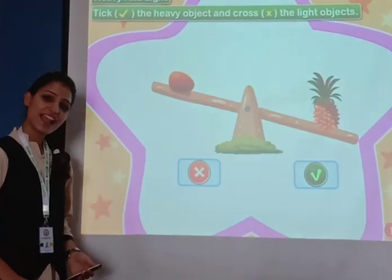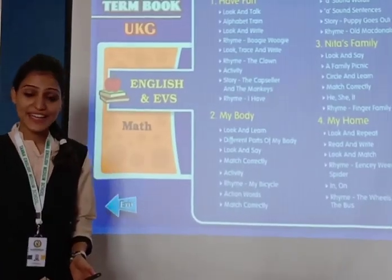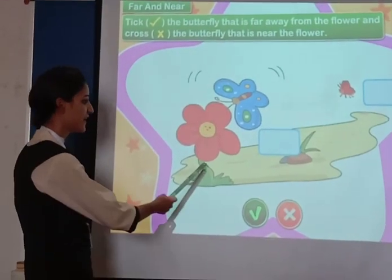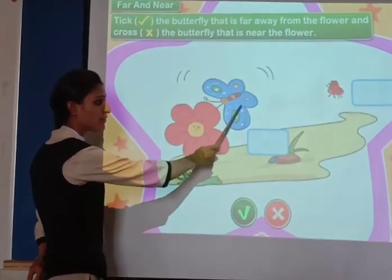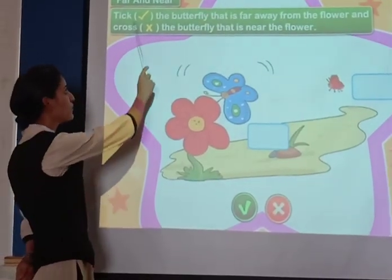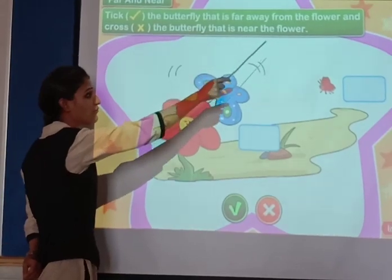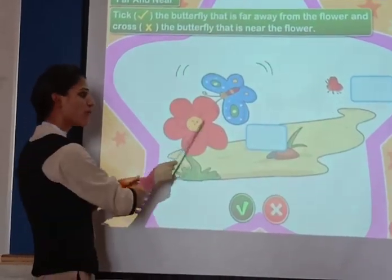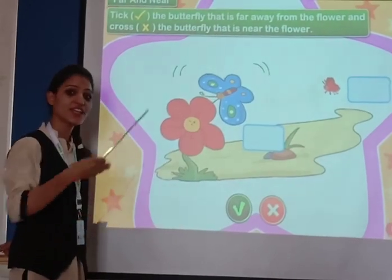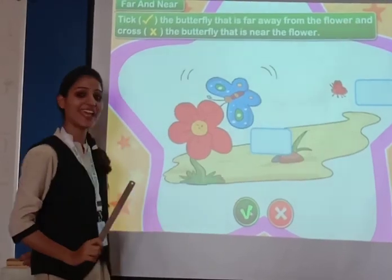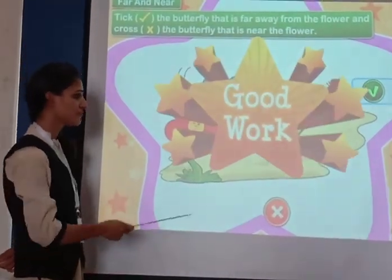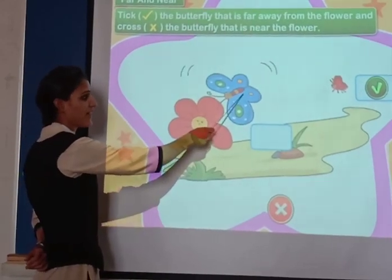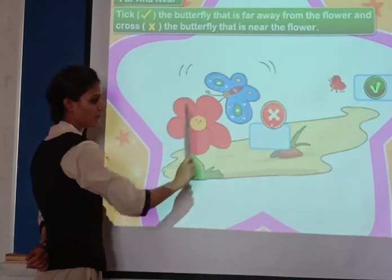This was the concept of heavy and light. Now our next concept is near and far. Students, here we have one flower, a big butterfly, and a small butterfly. We have to tick the butterfly that is far away from the flower — jyo butterfly is flower se far hai, hameh usse tick karna hai. This butterfly is near to the flower, so we will put cross over here. Very nice.